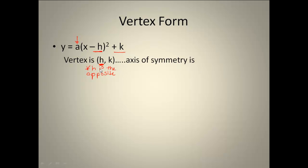When we try to get our vertex, you have got to remember to take the opposite of the h. Now what about our axis of symmetry? If you recall, our axis of symmetry is that vertical line that goes right through the vertex. Since it's a vertical line, it's x equals and it's our x coordinate of whatever our vertex is. So our axis of symmetry is x equals h.